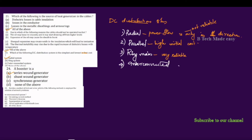Besides the method of trial and error, which method is employed for the solution of interconnected network problems? The circulating current method is used for solving interconnected system problems, along with the trial and error method.